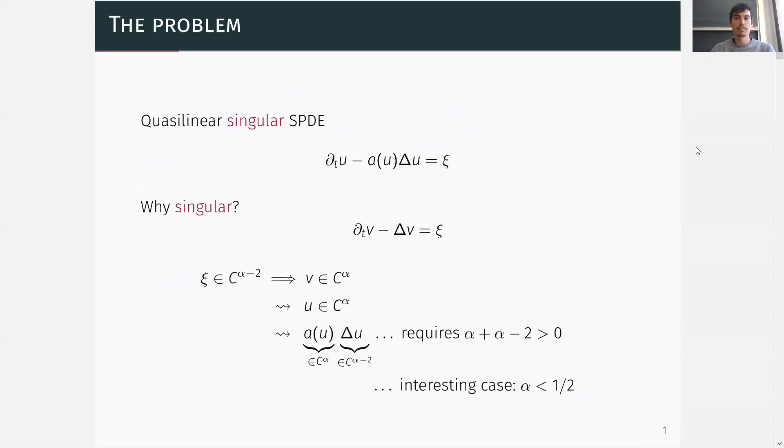Let me start right away with the problem. We consider the quasi-linear singular SPDE ∂_t u - a(u)Δu = ξ, where ξ is a space-time white noise. First, I want to remind you what it means for an equation to be singular and why this is a singular equation.